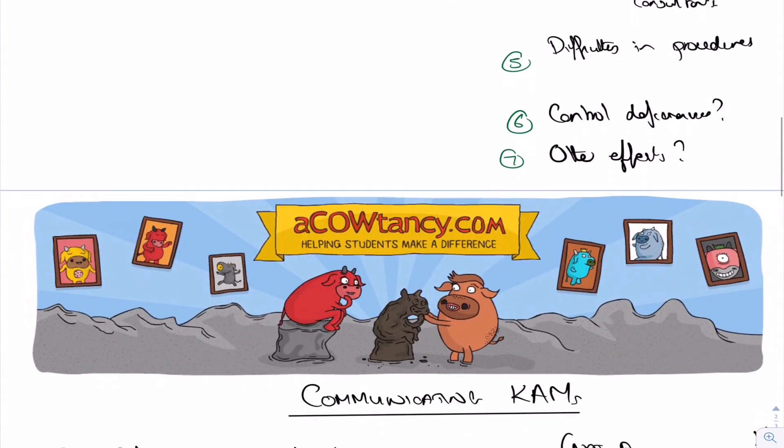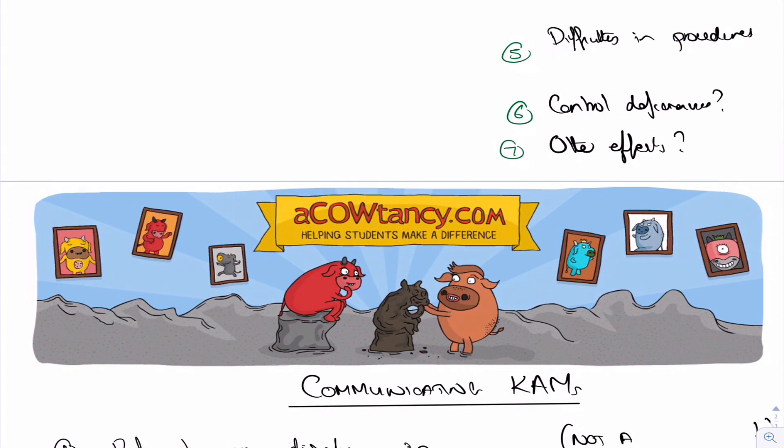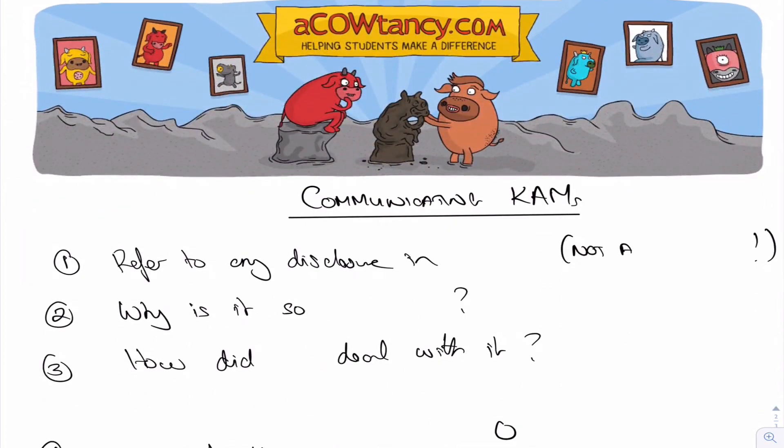Once we've decided what are the key audit matters, we then need to communicate it. We communicate them to the users. So how do we go about it? We refer to any disclosure in the financial statements. There might not be one, but often there will be disclosure already about this issue in the financial statements, if there is any, but not a duplicate. No point duplicating what's already in there. This is from our point of view now, not the management. We also need to communicate why is it so significant. This is where we talk about the judgment, the complexity, the amount of the error, that sort of thing. And then, how did we go about dealing with it? All that needs to go in the paragraph.